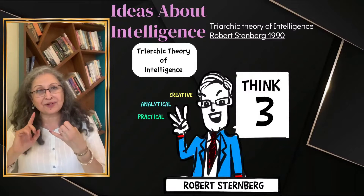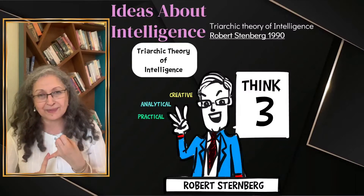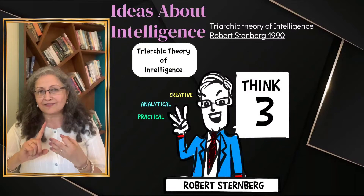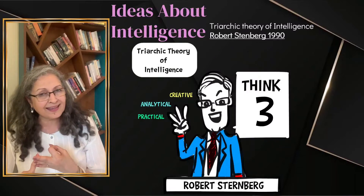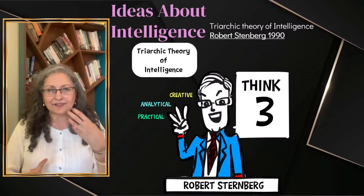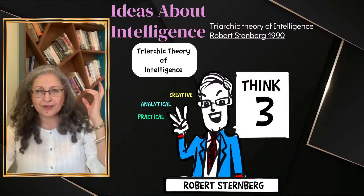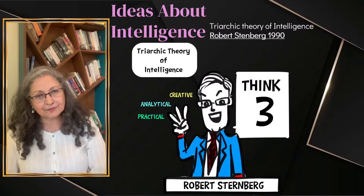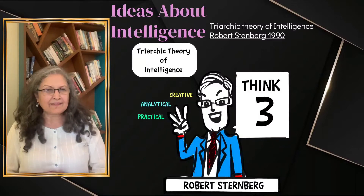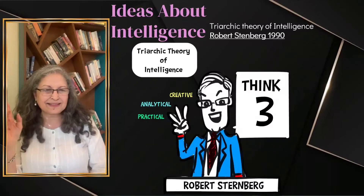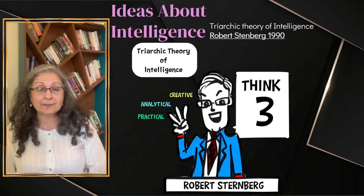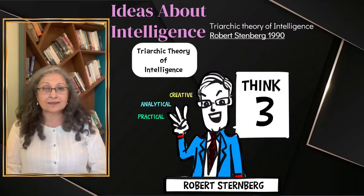We've talked about Alfred Binet's IQ, Daniel Goleman's EQ, Howard Gardner's multiple intelligences in the third episode, and Raymond Cattell's ideas of crystallized and fluid intelligence in the fourth episode. This is the fifth, and there will be just one more — which will bring the queen of it all, Carol Dweck.